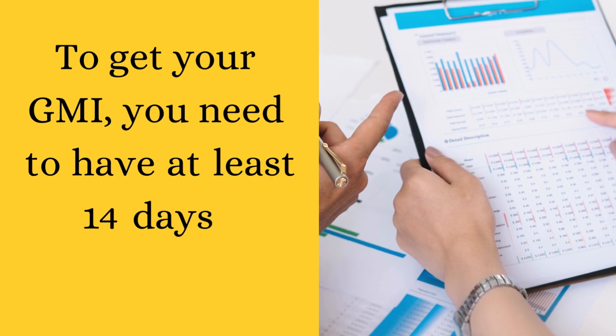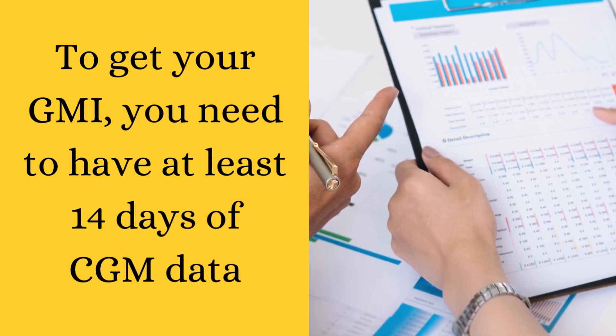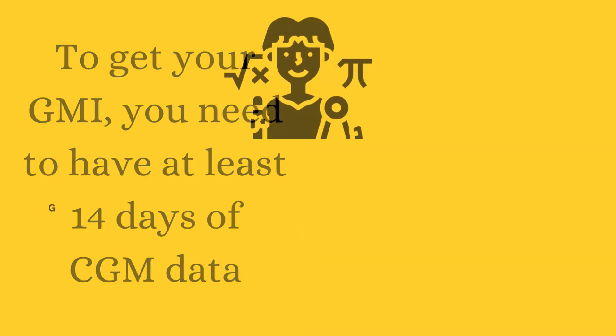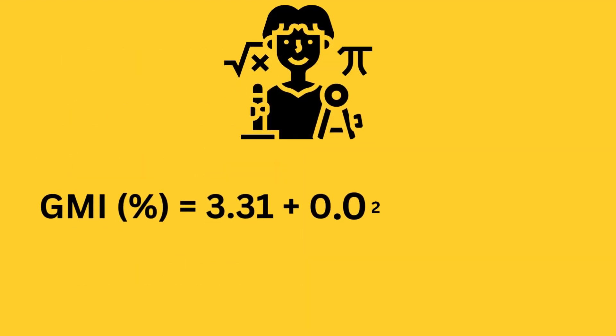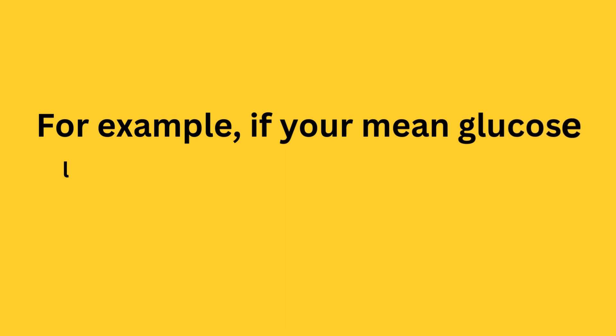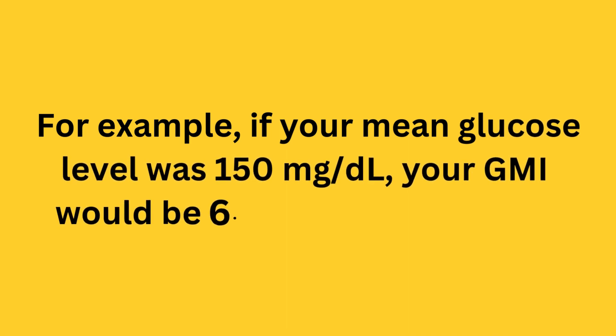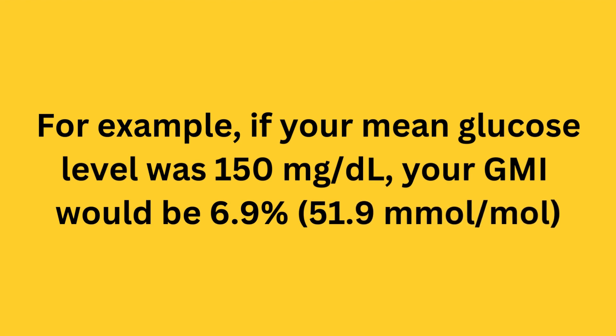To get your GMI, you need to have at least 14 days of CGM data. Then you can use a formula to convert your mean glucose to GMI — the formula is on the screen. For example, if your mean glucose level was 150 milligrams per deciliter, your GMI would be 6.9 percent.